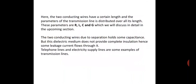The two conducting wires have a certain length. The transmission line has a certain length and its parameters — resistors, inductors, capacitors, and admittance — are distributed over its entire length. The two conducting wires also hold some capacitance due to their parallel arrangement. A dielectric medium is used between them, but it does not completely remove distortion — some leakage current flows through it, causing power wastage of the signal.